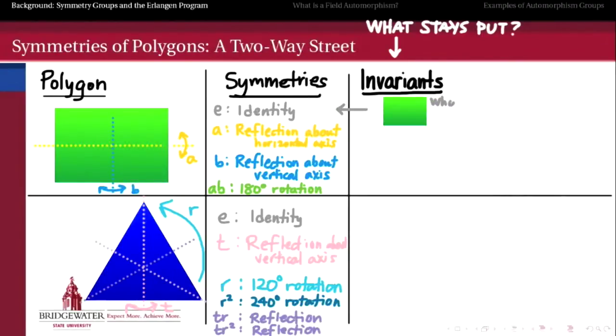For example, if I apply the identity symmetry to the rectangle, the whole rectangle stays put. And so we would say that the invariant of the identity acting on this rectangle is the whole rectangle itself. For the reflections, it's a different story. If I apply a reflection about the horizontal axis, then all the points on that horizontal axis are going to stay put. So we call the horizontal axis the invariant of the symmetry A. Likewise, for a reflection about the vertical axis, we get the vertical axis to be the invariant of that transformation. And then the 180-degree rotation is kind of interesting because only the point that's in the center of this rectangle will stay put. So only that point is an invariant of that symmetry operation.